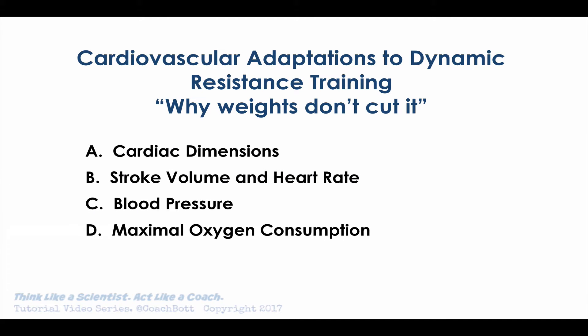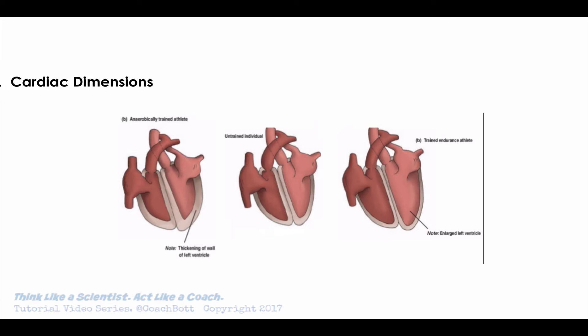There are four components of adaptation to this particular stimulus — weight training — broken into four categories: cardiac dimensions, stroke volume and heart rate, blood pressure, and maximal oxygen consumption. That's a lot of vocabulary, so I'm going to go through each one individually, explain what it is, and talk about what adaptations we might expect to see from a resistance training program.